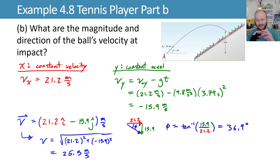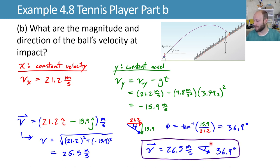Expressed in one succinct statement, we can then say that my final velocity is 26.5 meters per second in magnitude at a direction below the horizontal of 36.9 degrees.